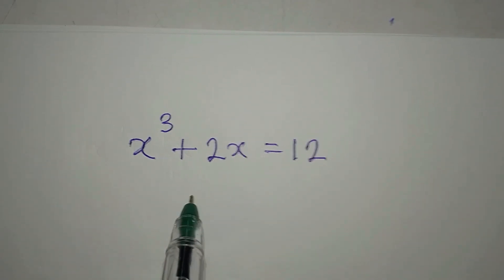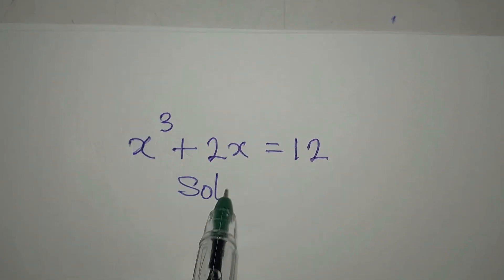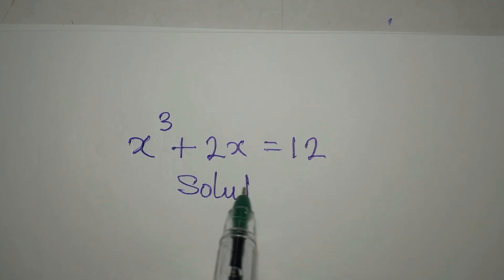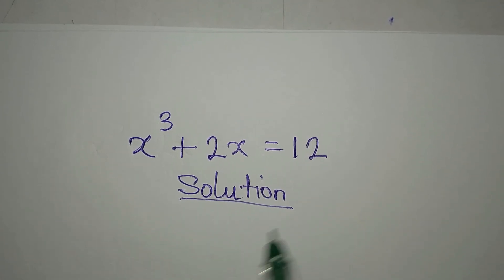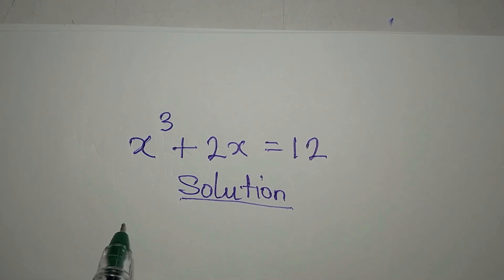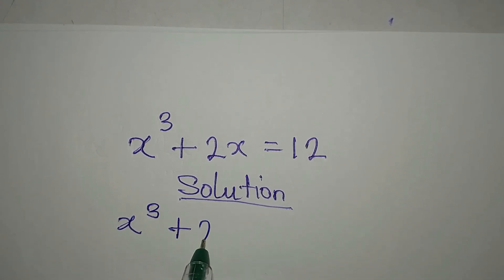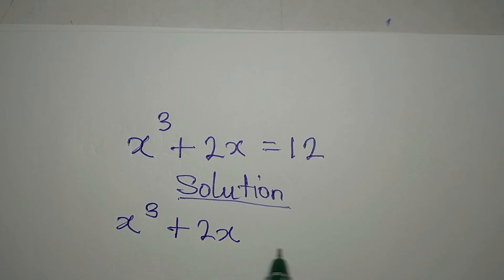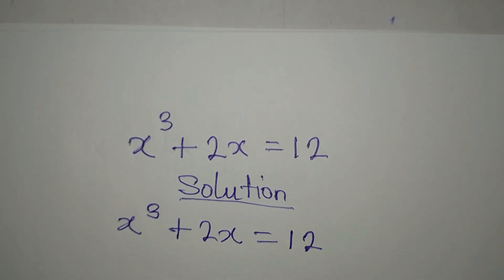Hello everyone, let's provide the solution to this problem very quickly. We have x to the power of 3 plus 2x equals 12.